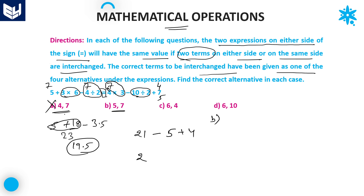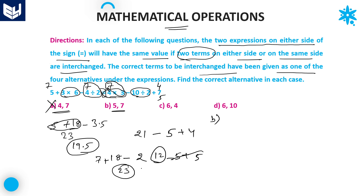After division, multiplication: 3 into 6 is 18. Then 7 plus 18 minus 2 — the left hand side value is 23. For the right hand side, first priority is division: 10 divided by 2 is 5. Then multiplication: 4 into 3 is 12. 12 minus 5 plus 5 — the fives cancel — giving 12. Left hand side is 23, right hand side is 12, so option B is also eliminated.